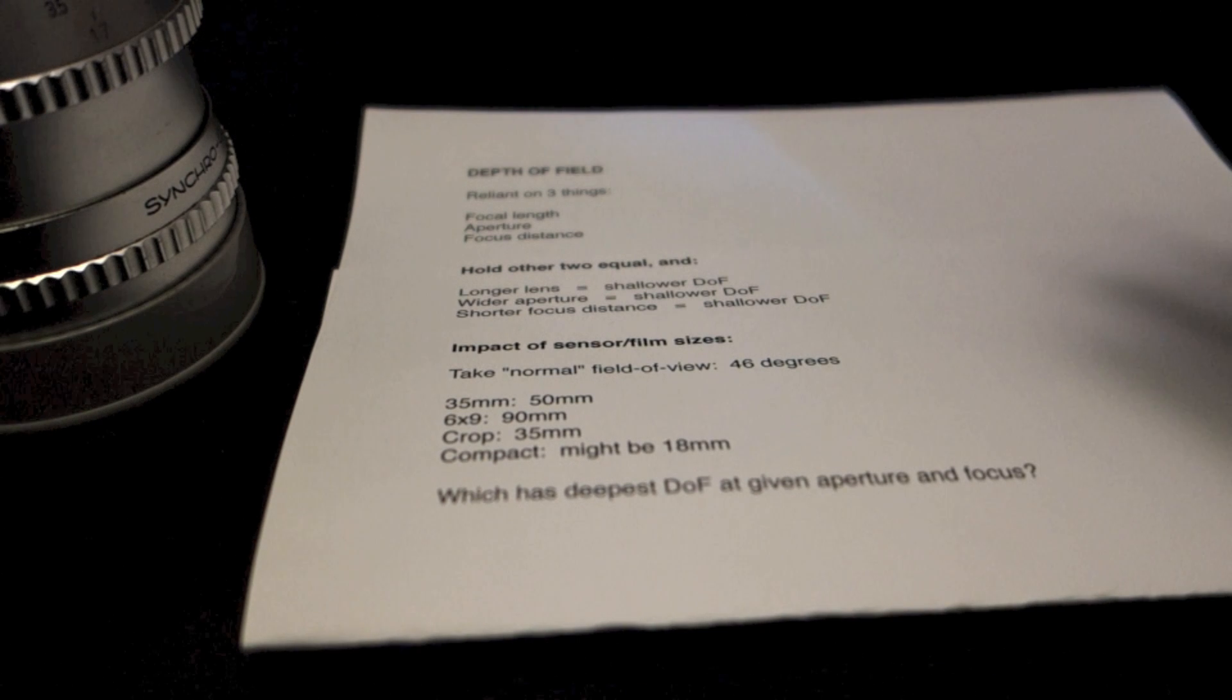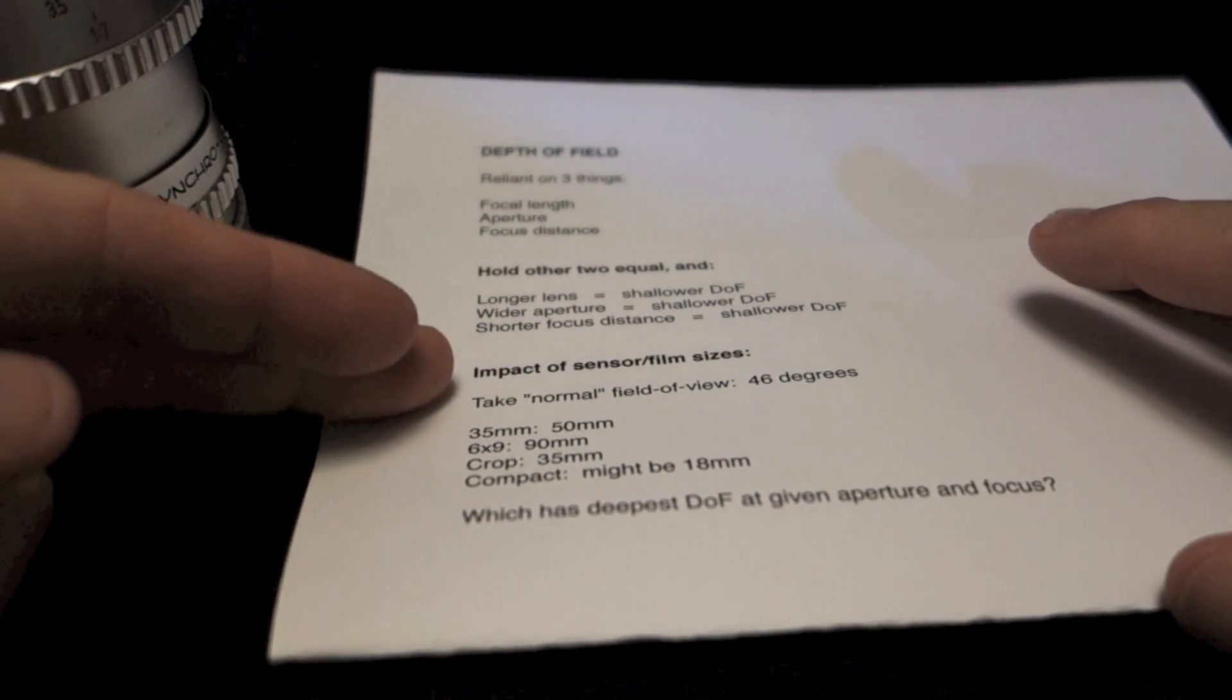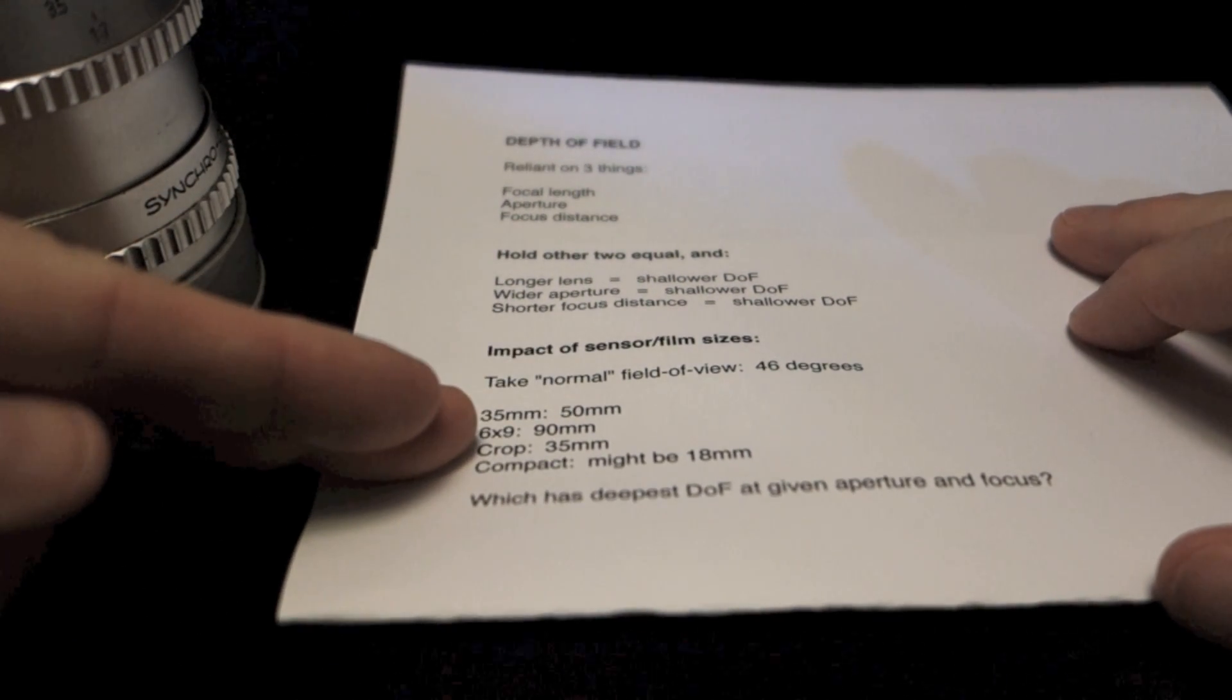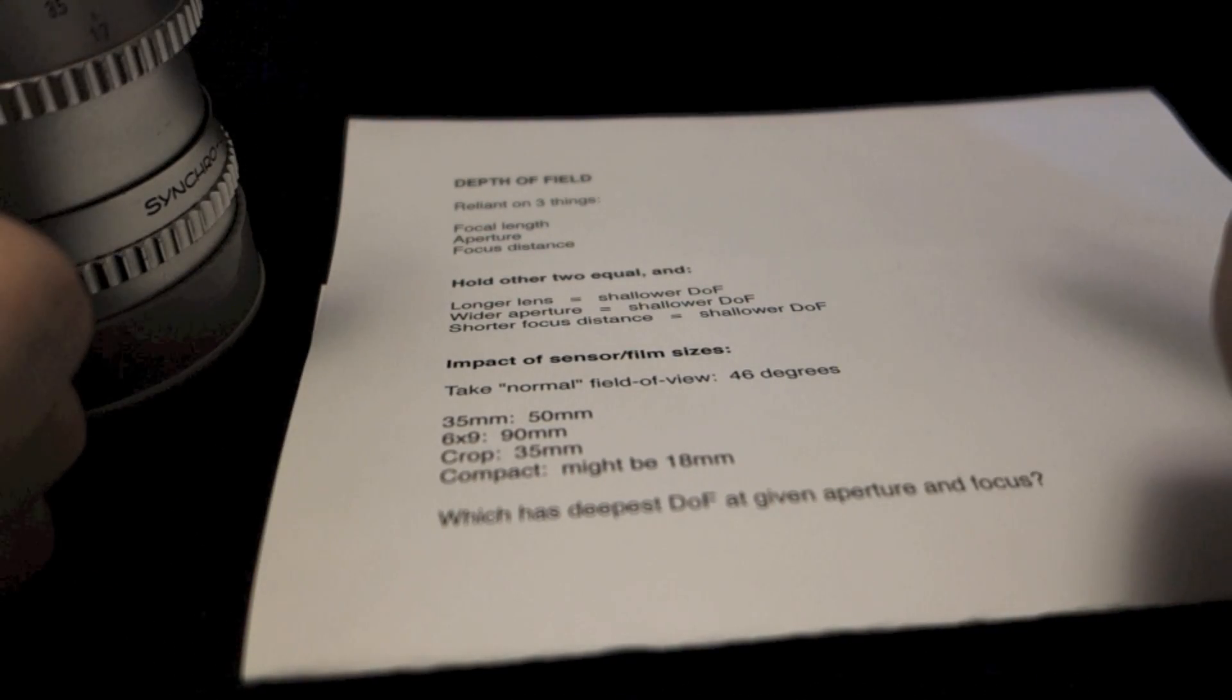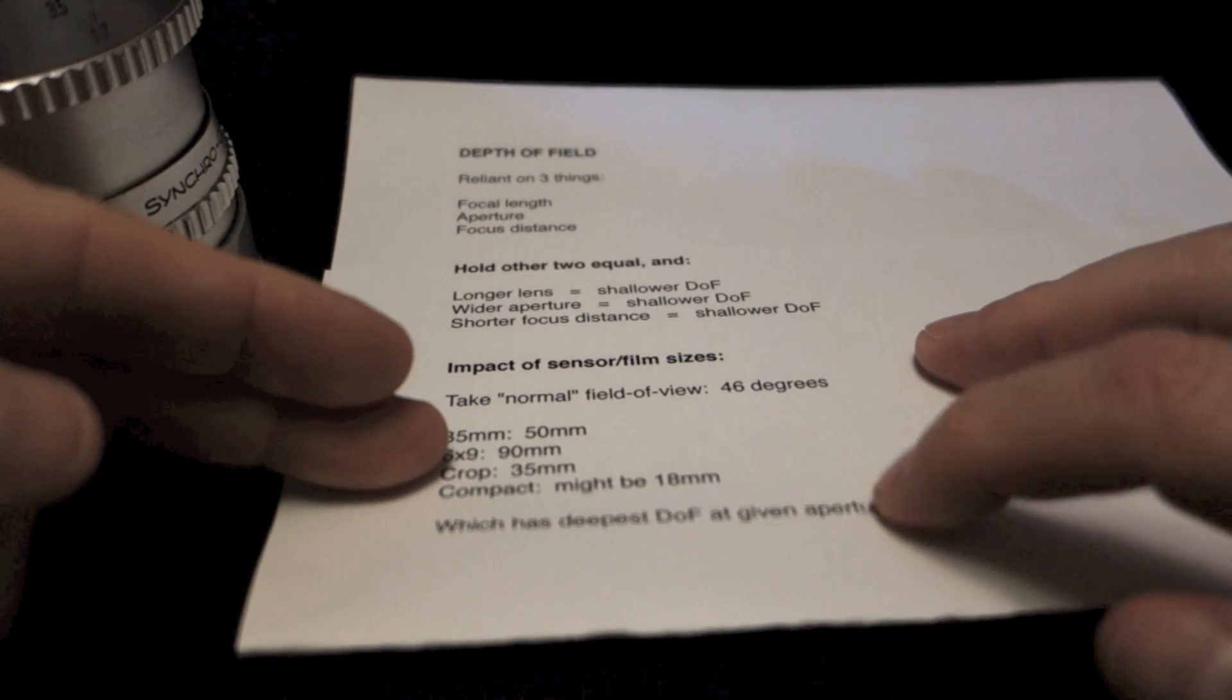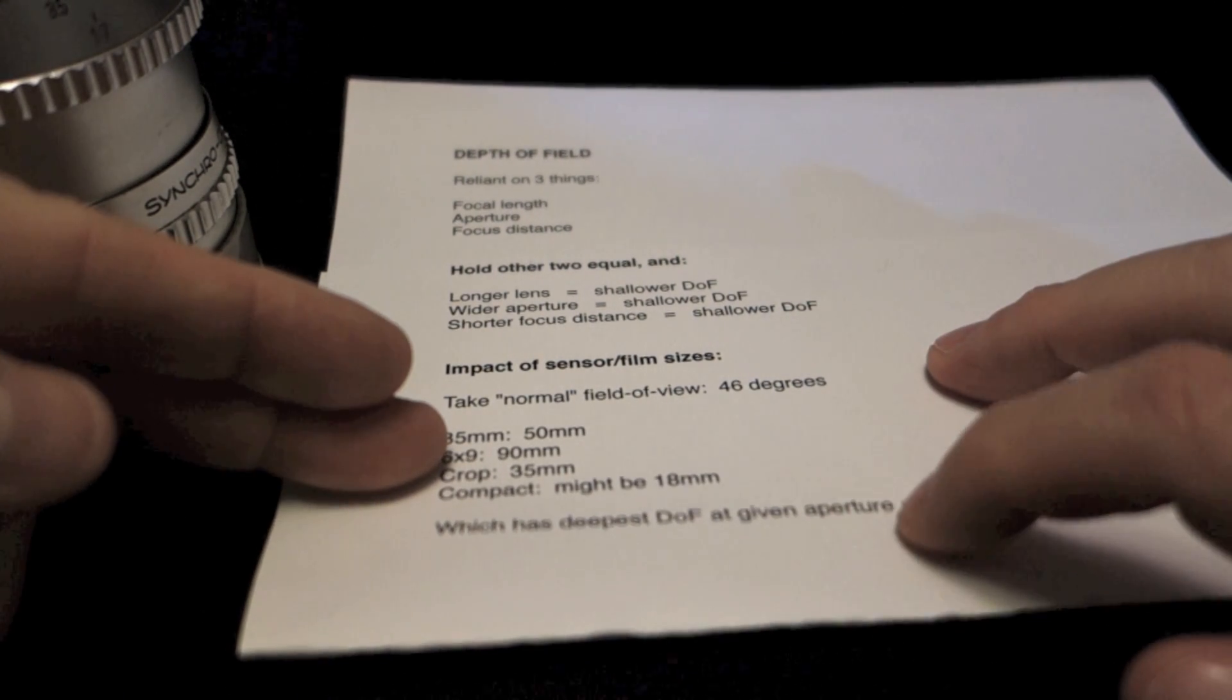So that's what I want. Now let's look at what I have to actually mount on different cameras to get that field of view. As I said, on a 35, that's a 50mm. On a 6x9, because the film is so much bigger, you need a correspondingly longer lens to get that same field of view. So you're going to have to put a 90 on it, roughly, to get that same field of view on your negative.